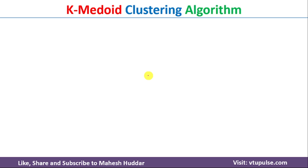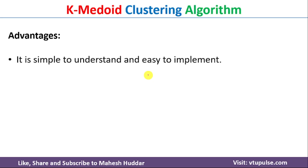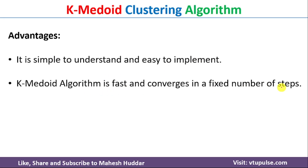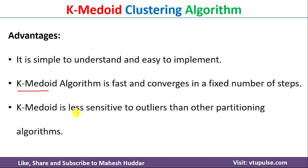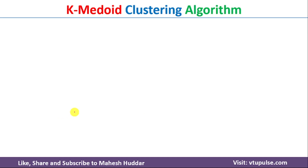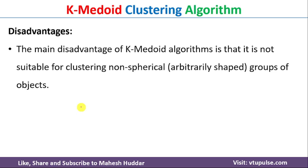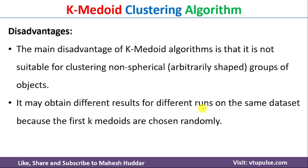The advantages of K-Medoid clustering are: it is a simple algorithm, easy to implement, fast, and converges in a fixed number of steps compared to K-Means. It is also less sensitive to outliers, making it work well on datasets with outliers. The disadvantages are: it is not suitable for non-spherical clusters, and it may produce different results on different runs because the initial Medoids are selected randomly.